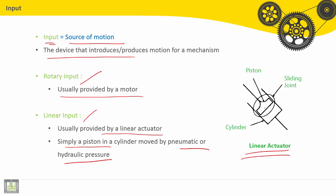As shown here in the figure, we have the piston and the cylinder. It can be a pneumatic or hydraulic pressure cylinder to provide linear motion.